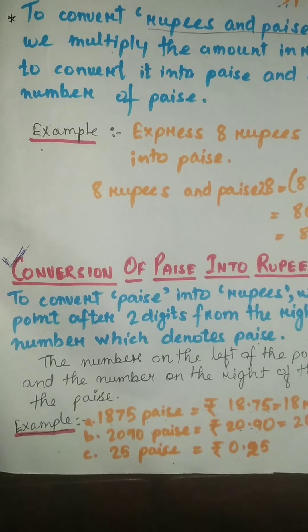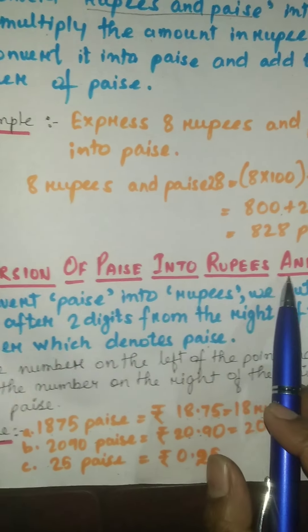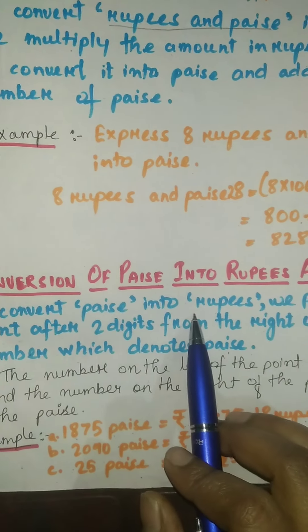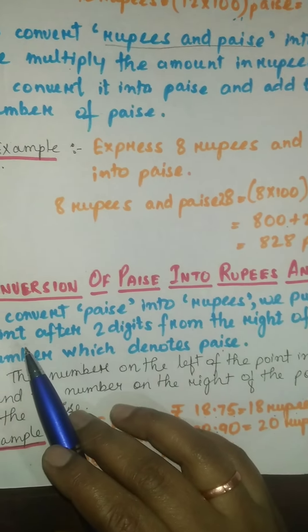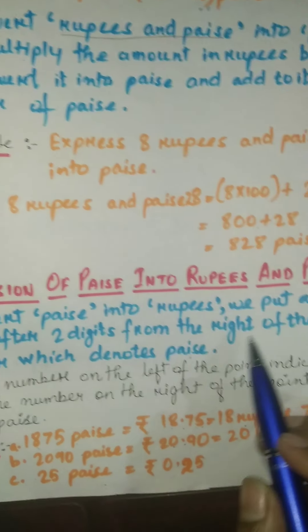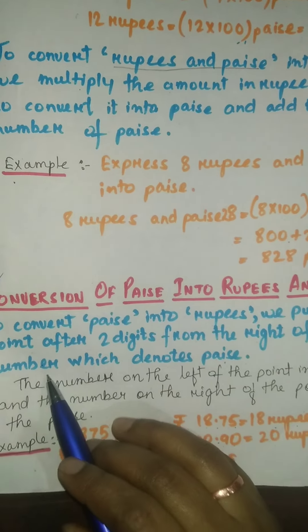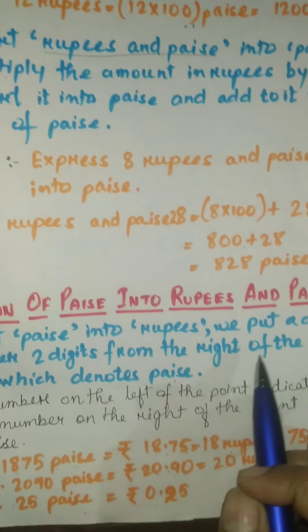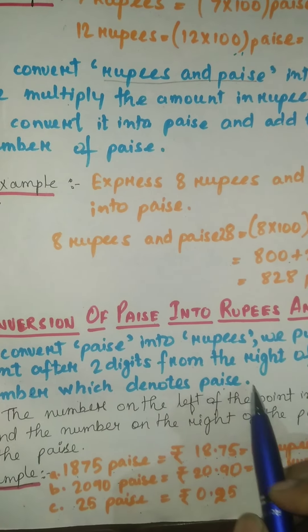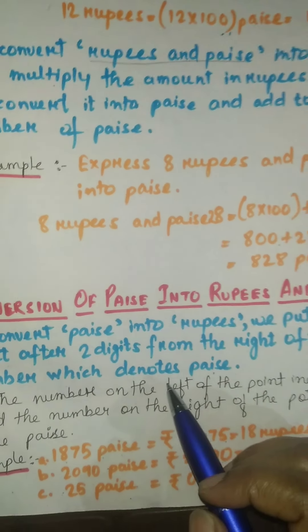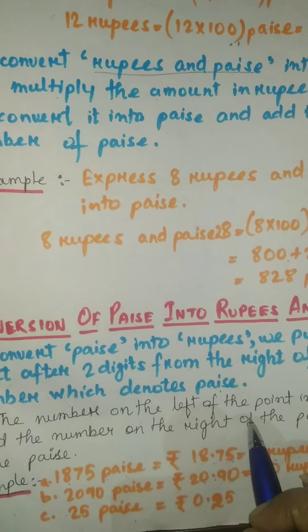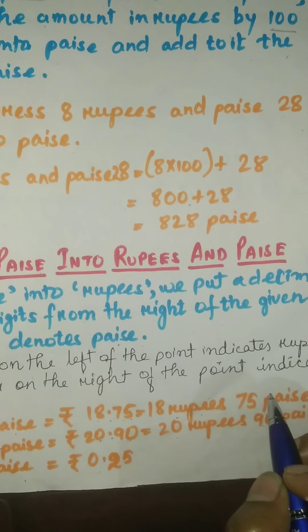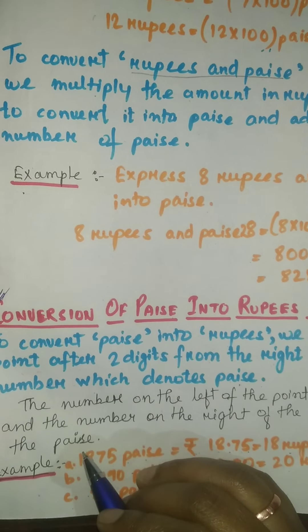Before we start, let us have some discussion on what we learned in the previous class — conversion of paise into rupees and paise. To convert paise into rupees, we put a decimal point after two digits from the right of the given number which denotes paise. The number on the left side of the point indicates rupees and the number on the right side of the point indicates paise.